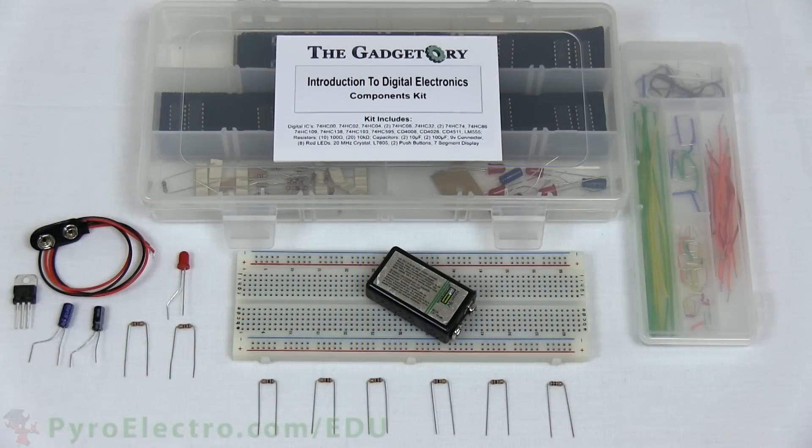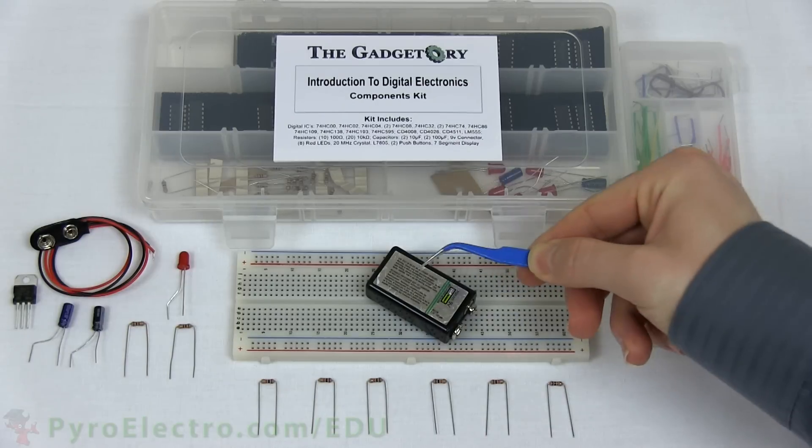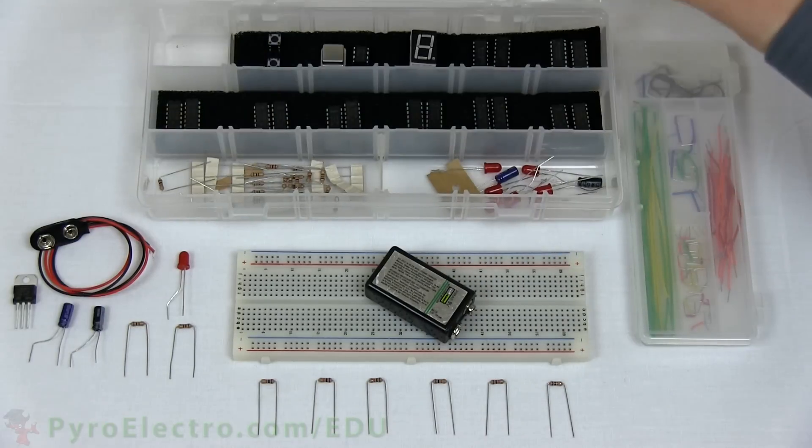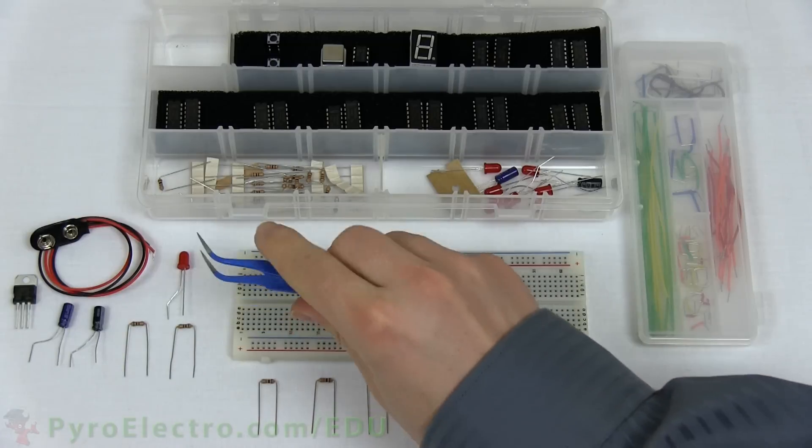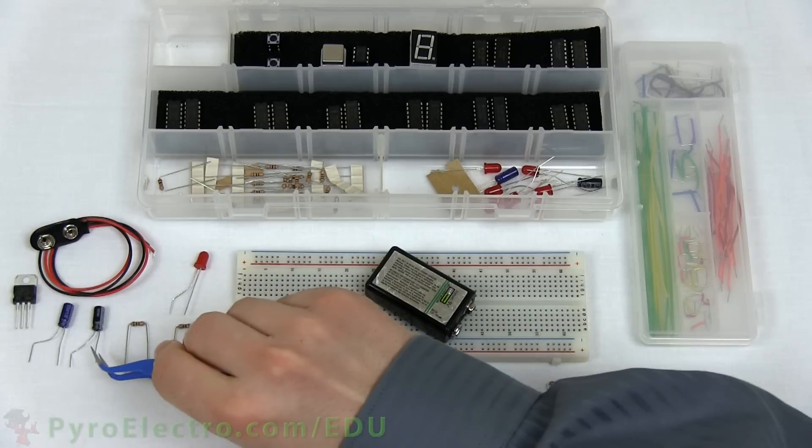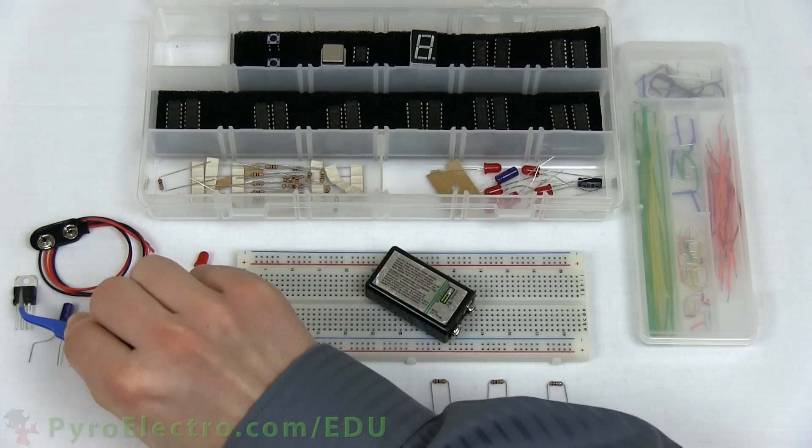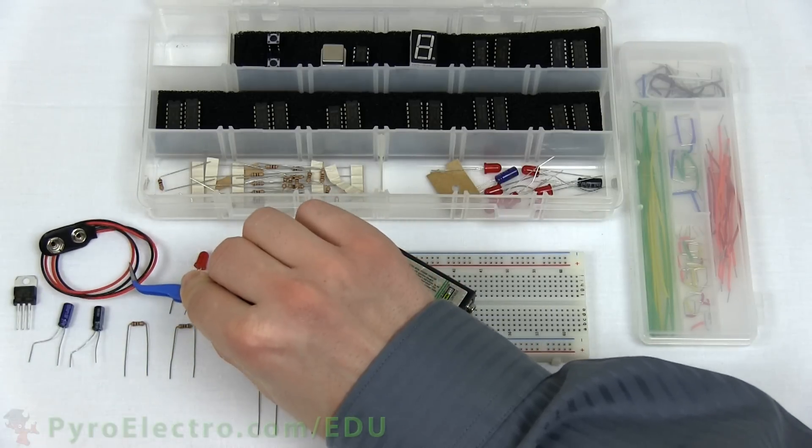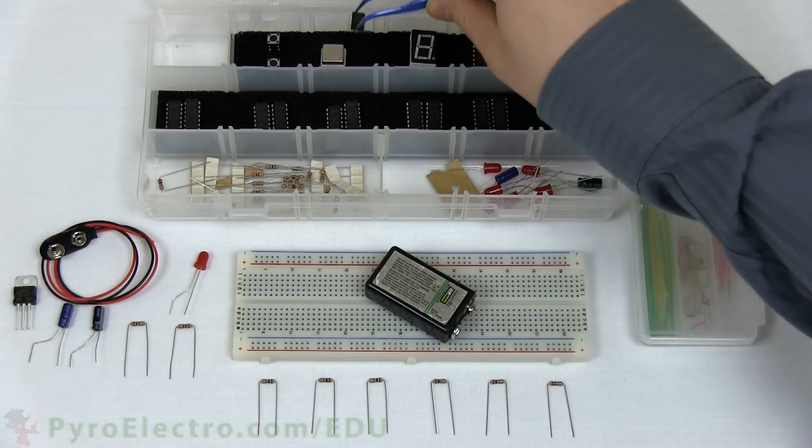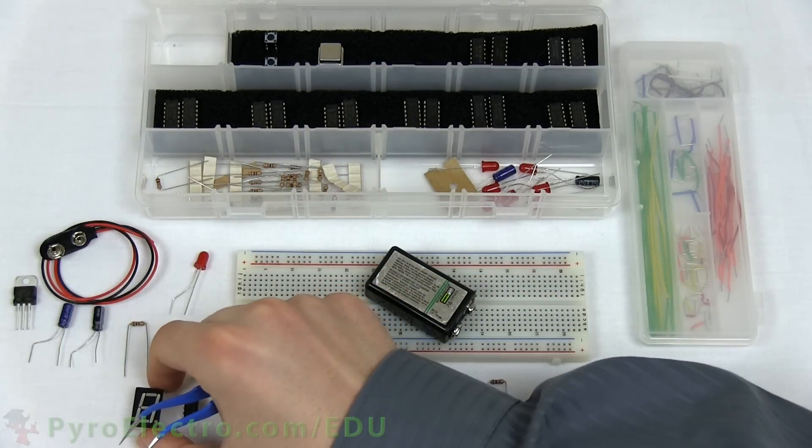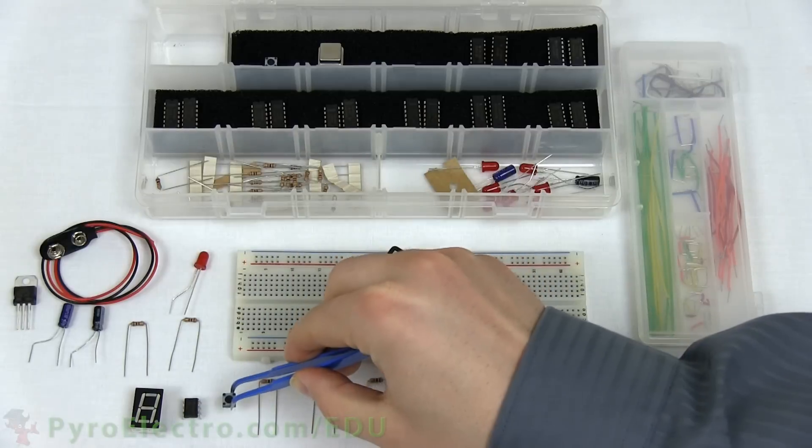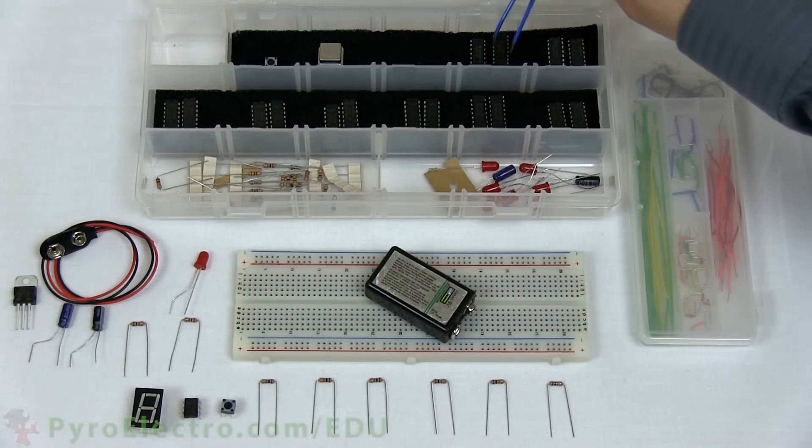The parts we'll need to build this counting and display circuit are the jumper wire kit, a breadboard, a 9 volt battery, and from the components kit: 6 10 kilohm resistors, 2 100 ohm resistors, 1 red LED, a 10 and 100 microfarad capacitor, 7805 plus 5 volt regulator, a 9 volt battery connector, a 555 timer, a 7 segment LED display, a push button, and a 4026 logic IC.